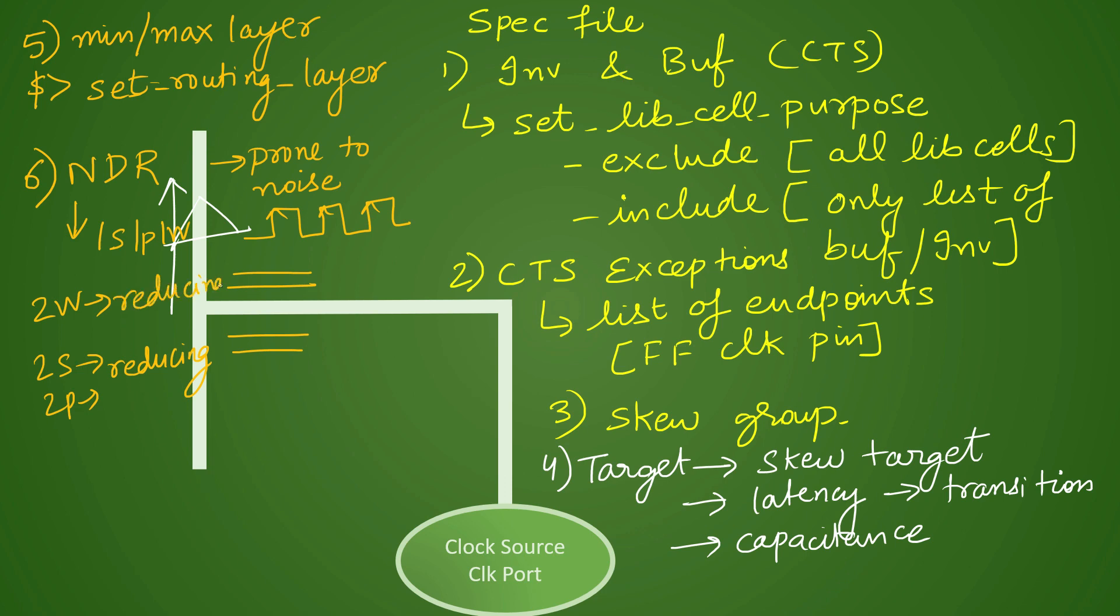Double width is for reducing the latency. When you give double width, your metal becomes thicker than rest of the signals in that particular layer, and increasing the width gives you lesser resistance. So resistance of that layer will reduce in that signal, and if resistance reduces, consequently your latency will improve. That is how we specify the NDR. The command to do that is set_routing_rule.